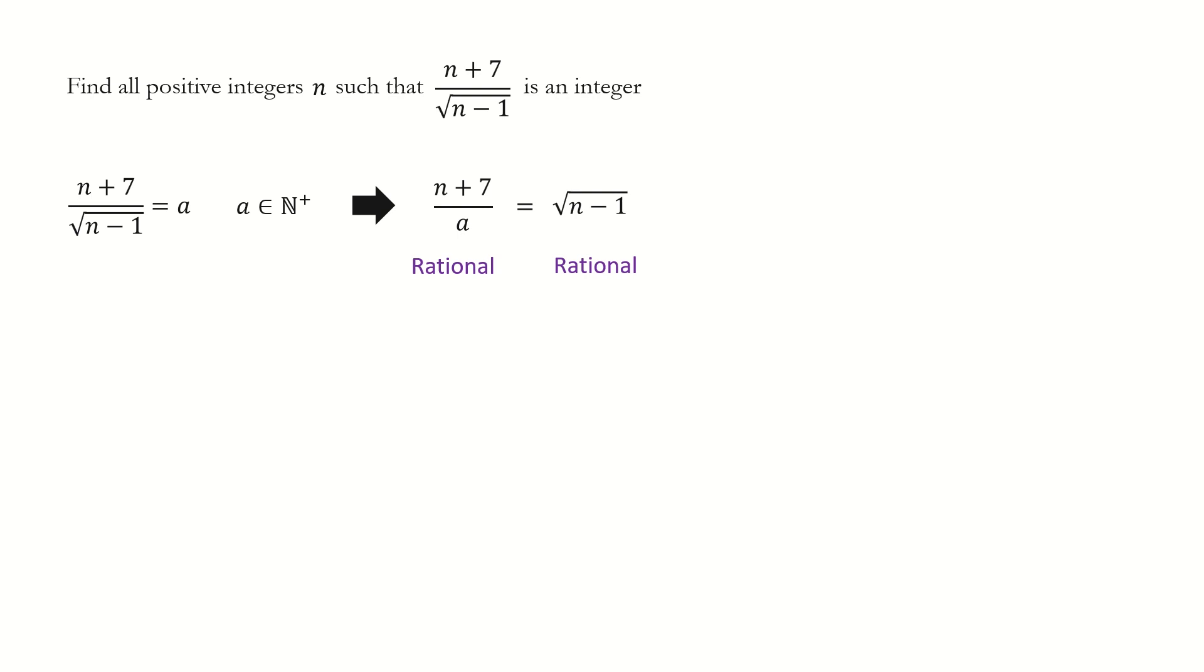If the right-hand side is rational, that means n minus 1 must be a perfect square. So we set n minus 1 equals to k squared, where k is a positive integer. We can solve for n, which is k squared plus 1.